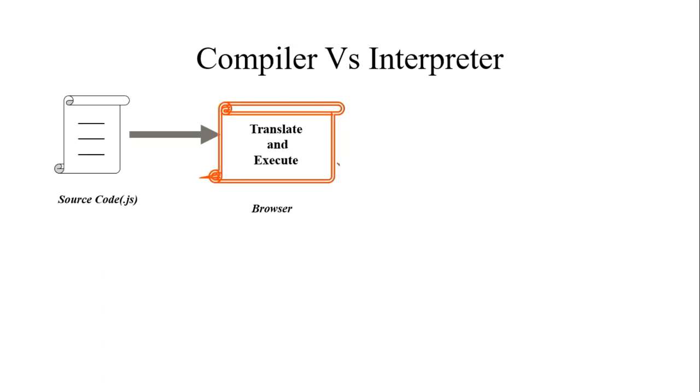Browser translates and executes the particular .js file. So now, what is the responsibility of the browser? The browser reads the file line by line, and as well, it will execute it at that time.